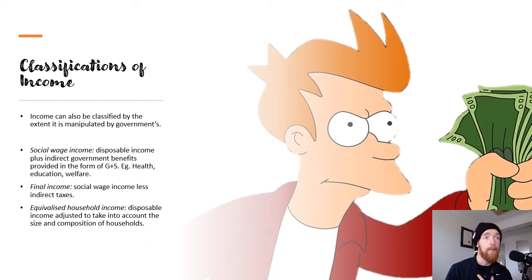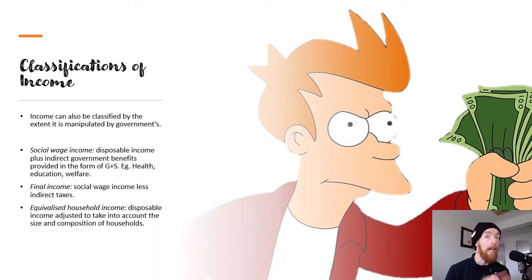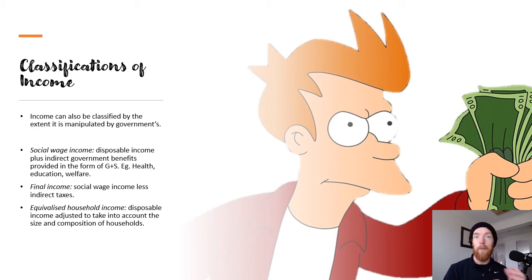And then lastly we've got equivalised household income, which is your disposable income adjusted to take into account the size and composition of households. For example, my household has two adults who work and an eight-month-old baby who understandably doesn't work. To work out equivalised household income they look at how many people are working, how many are in the household, and adjust it accordingly. Our income together is very different to a family of eight earning the same amount — it would stretch a lot less far — or if one person earned what we earn, it would stretch much further. It just adjusts income to make size and composition comparable across different households.